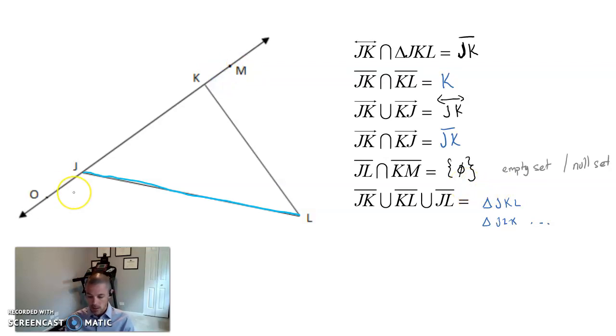And then, lastly, segment JK, segment KL, and segment JL. There's our three segments. They form a triangle. So, we list with the triangle symbol and then all three vertex or vertices of that triangle in any order. So, I did JKL, JLK. You can do KLJ. You can do LJK. It doesn't really matter as long as you have those three vertices with the triangle symbol.